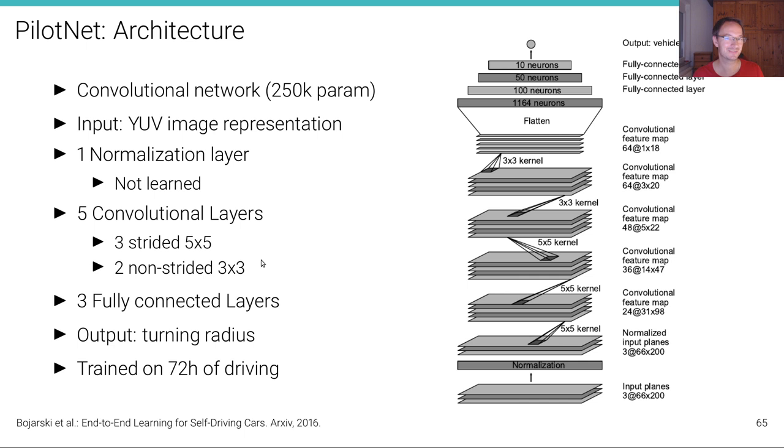Also the network architecture has evolved. It's much more complex, inspired by AlexNet. It's a convolutional network with now 250,000 parameters and five convolutional layers and three fully connected layers.